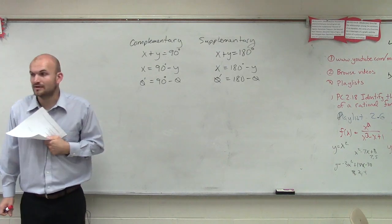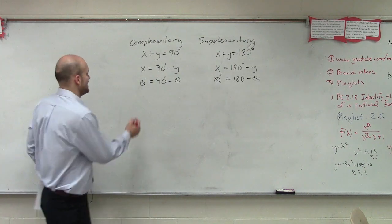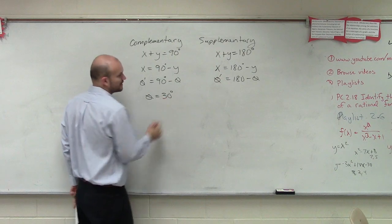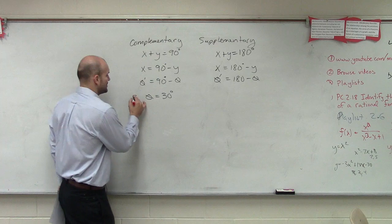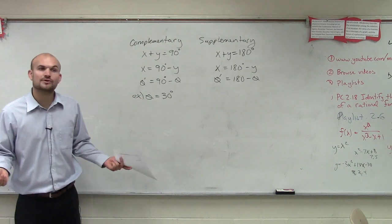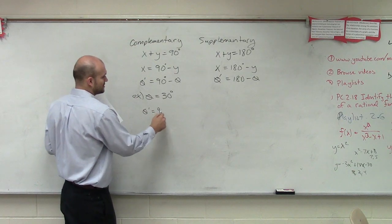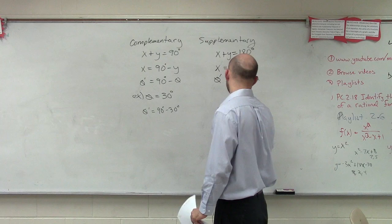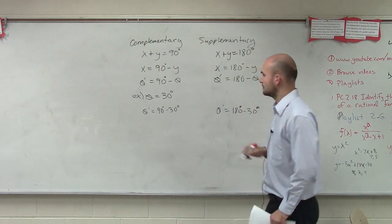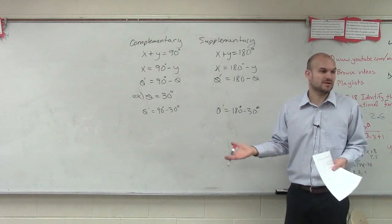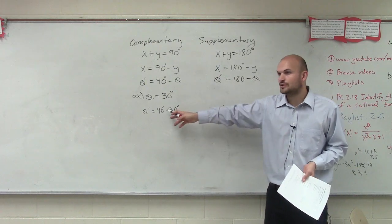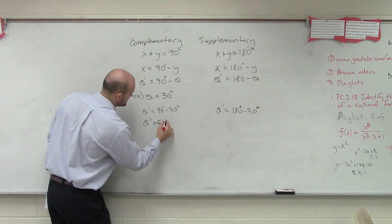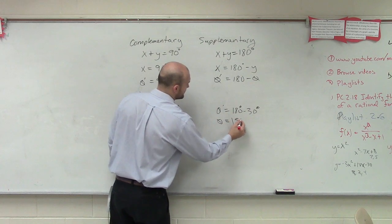So these are going to be your two definitions of complementary angles, all right? So let's say I give you an angle where I say theta is equal to 30 degrees. And I say find the complementary and supplementary angles. So if I say find the complementary and supplementary angles, what are you going to do? To find this, you just do theta prime equals 90 degrees minus 30 degrees, all right? And to find the supplementary, you just do theta prime equals 180 minus 30 degrees. So this answer is going to be theta prime equals 60 degrees. And this one, theta prime equals 150 degrees. Okay.